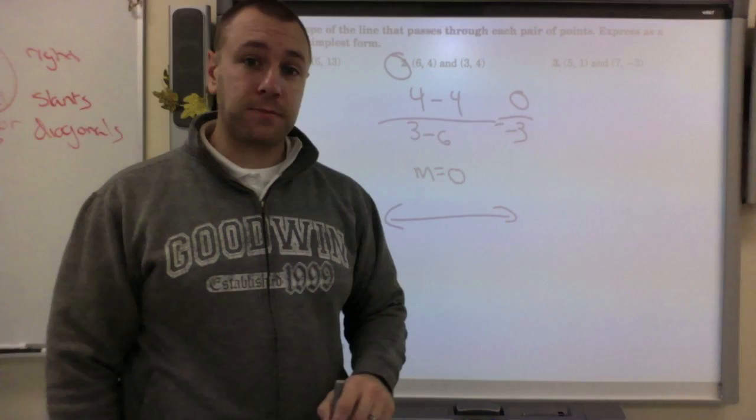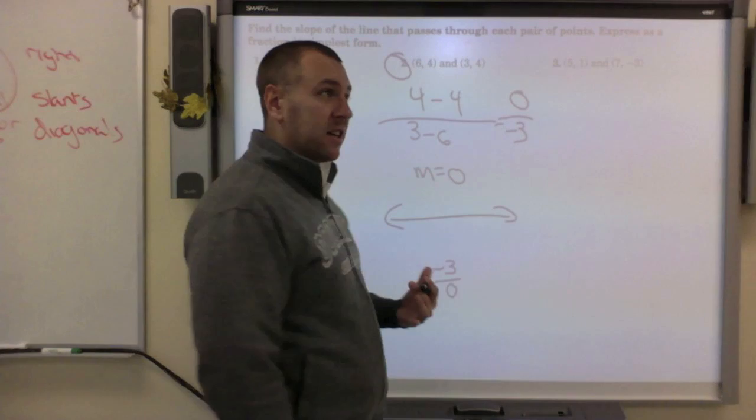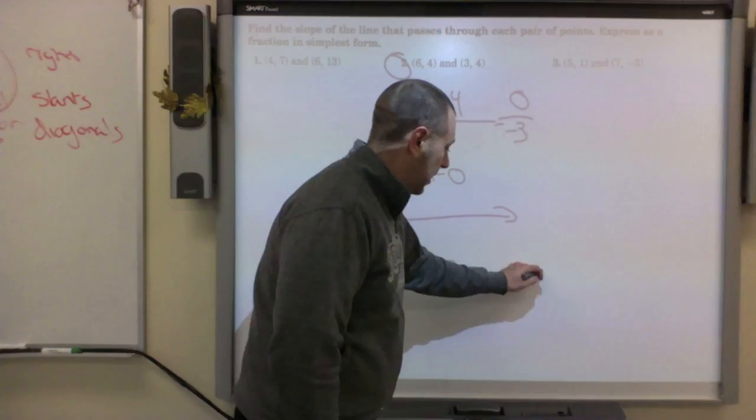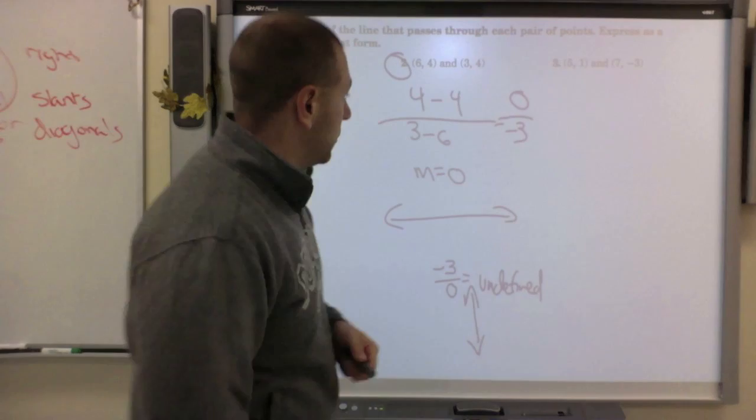The reverse of that is if we have something like negative 3 over 0. If you plug into the calculator it's not going to come up with a good answer. That's where we say it's undefined. Every time you say undefined, think of it as a cliff. It's a straight drop. That is the difference between those two types of slope, those are the special cases.